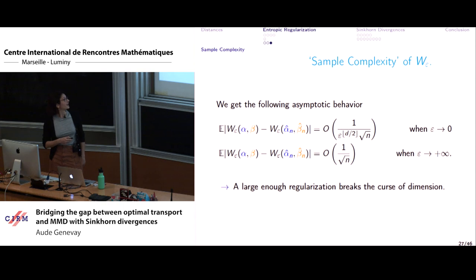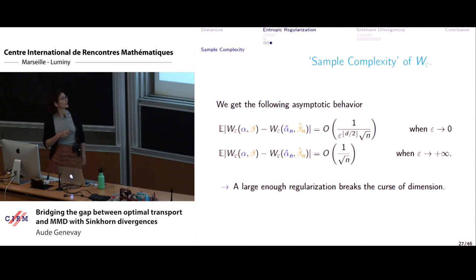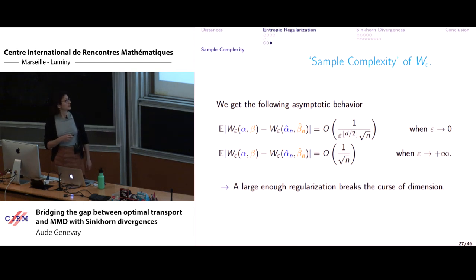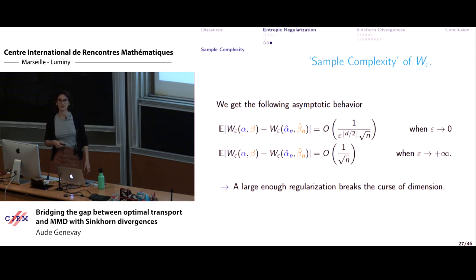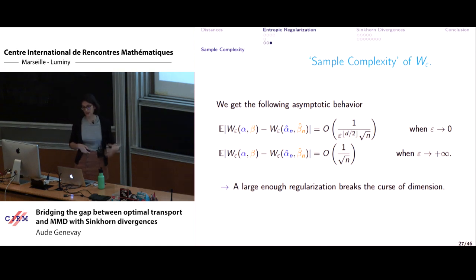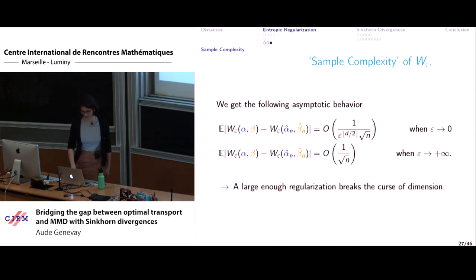When epsilon is small, you have a rate of O(1/√N) but with a bad constant of order ε^{-d/2}, recovering the curse of dimensionality. But when epsilon is large enough, you get something that scales as O(1/√N), closer to the sample complexity of MMD. Intuitively, a large enough regularization breaks the curse of dimensionality for optimal transport.